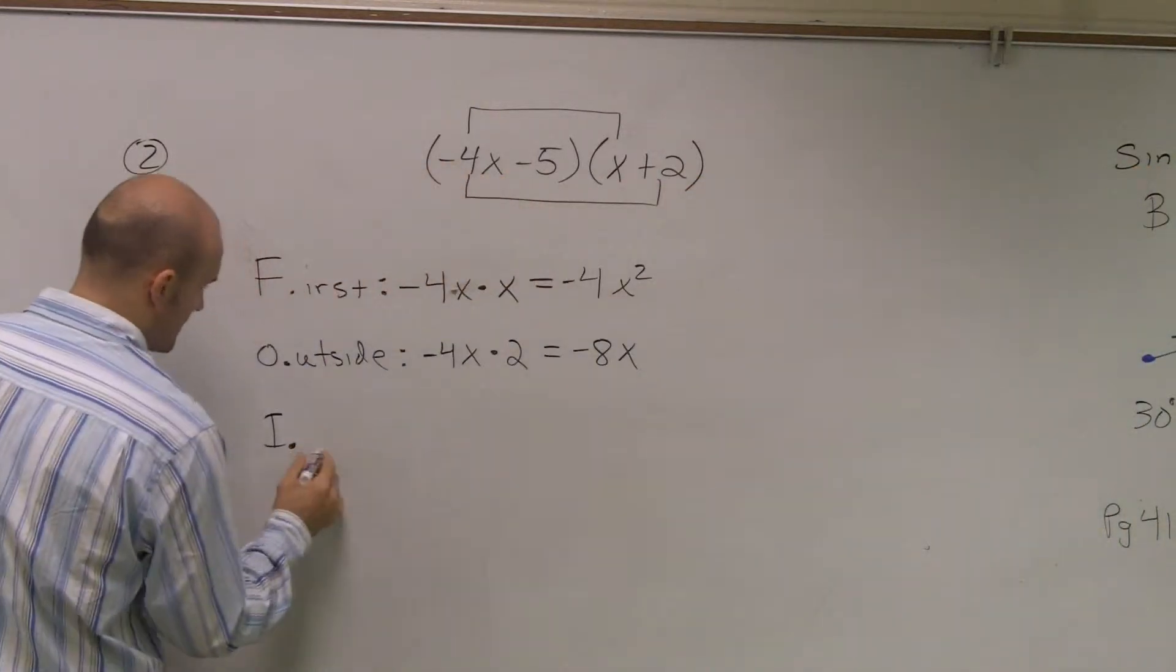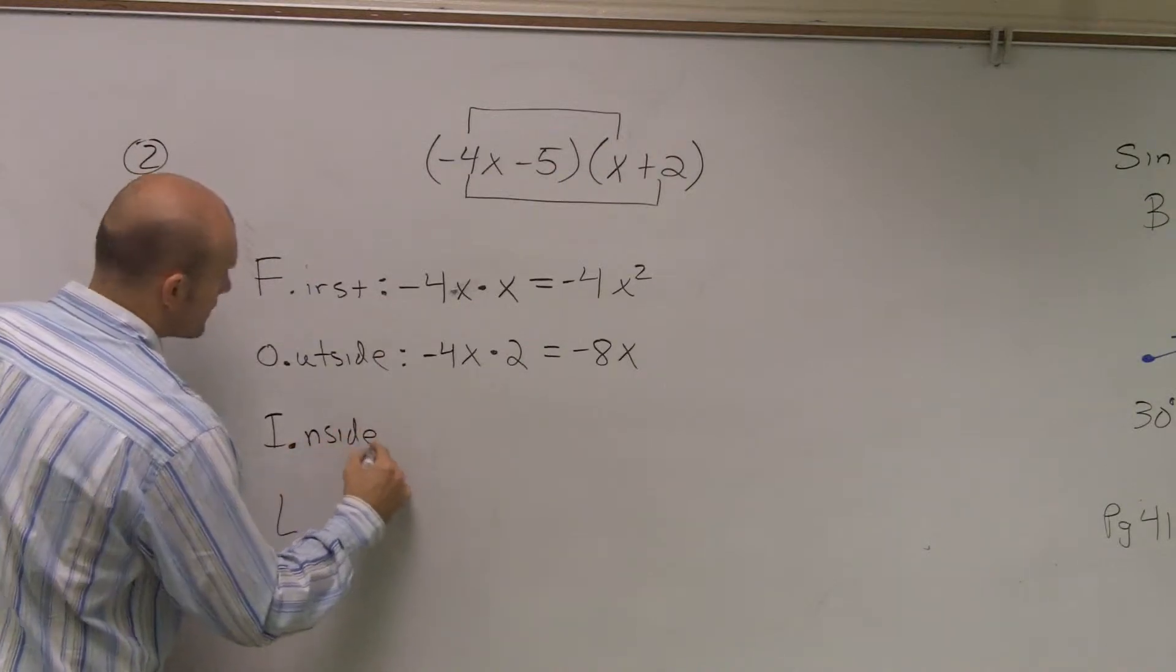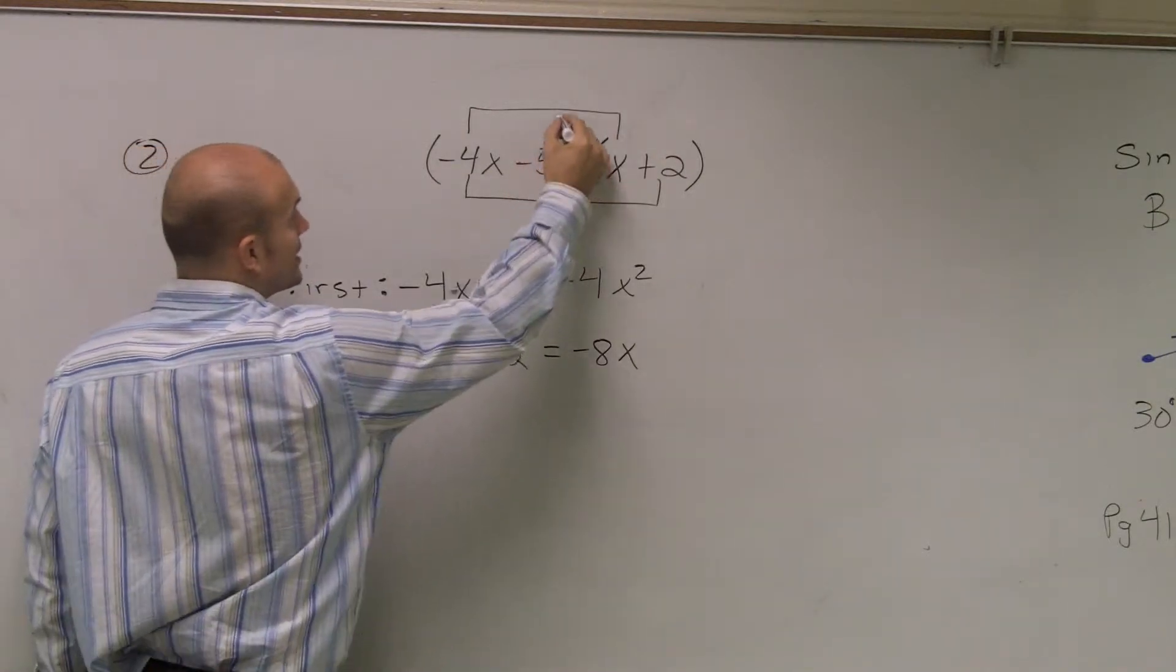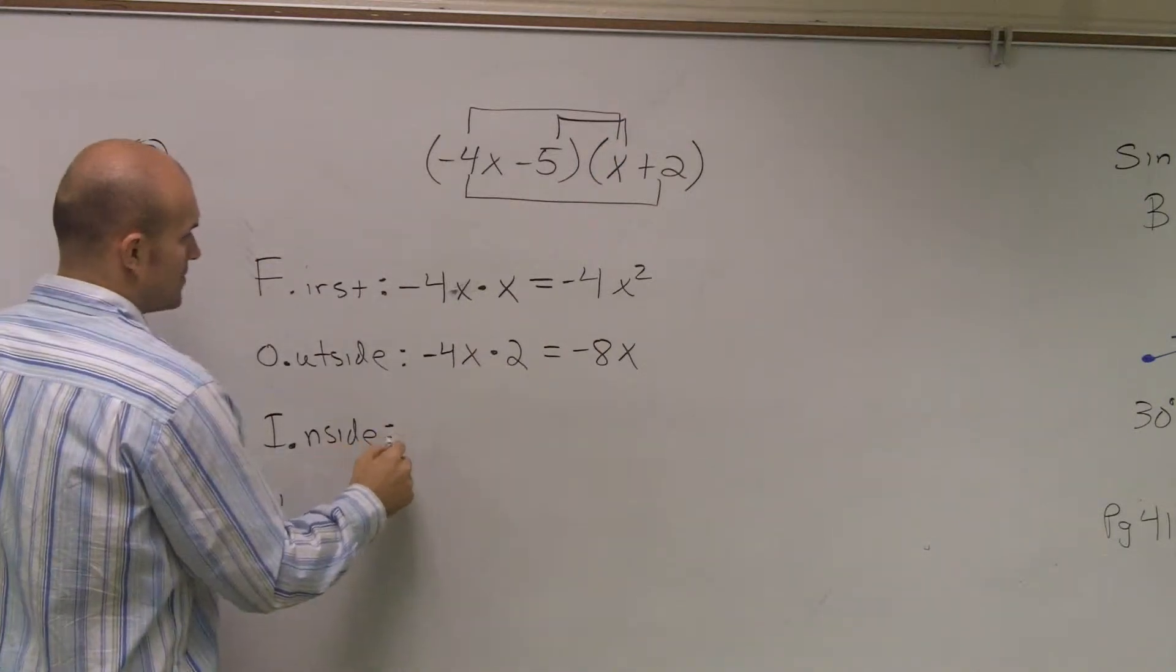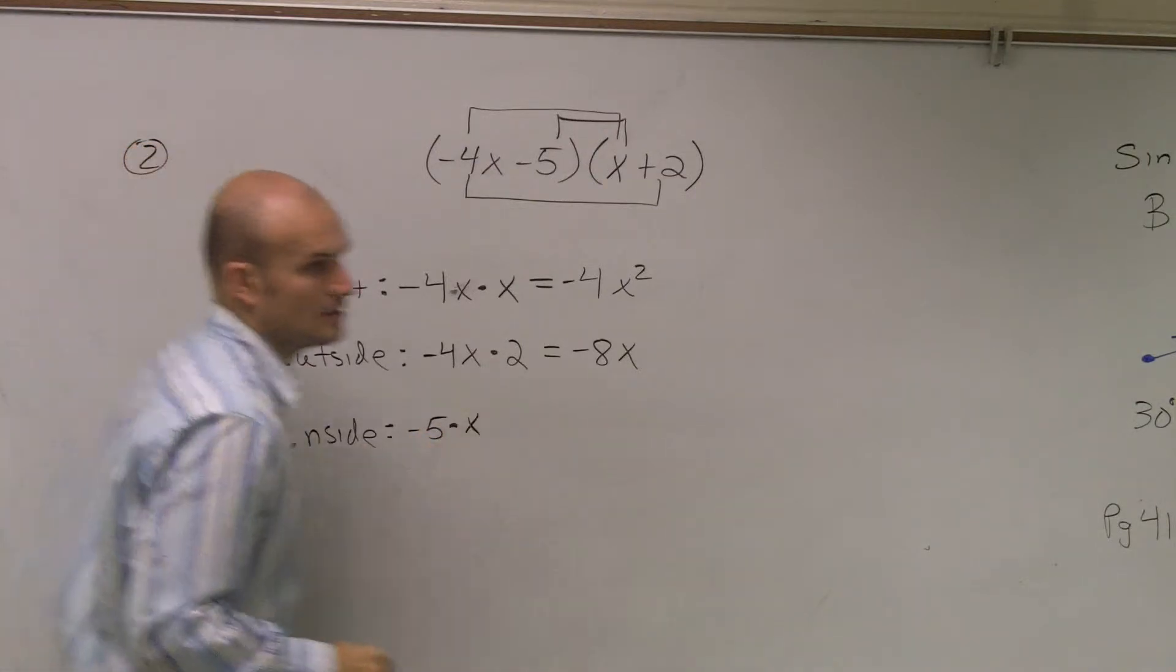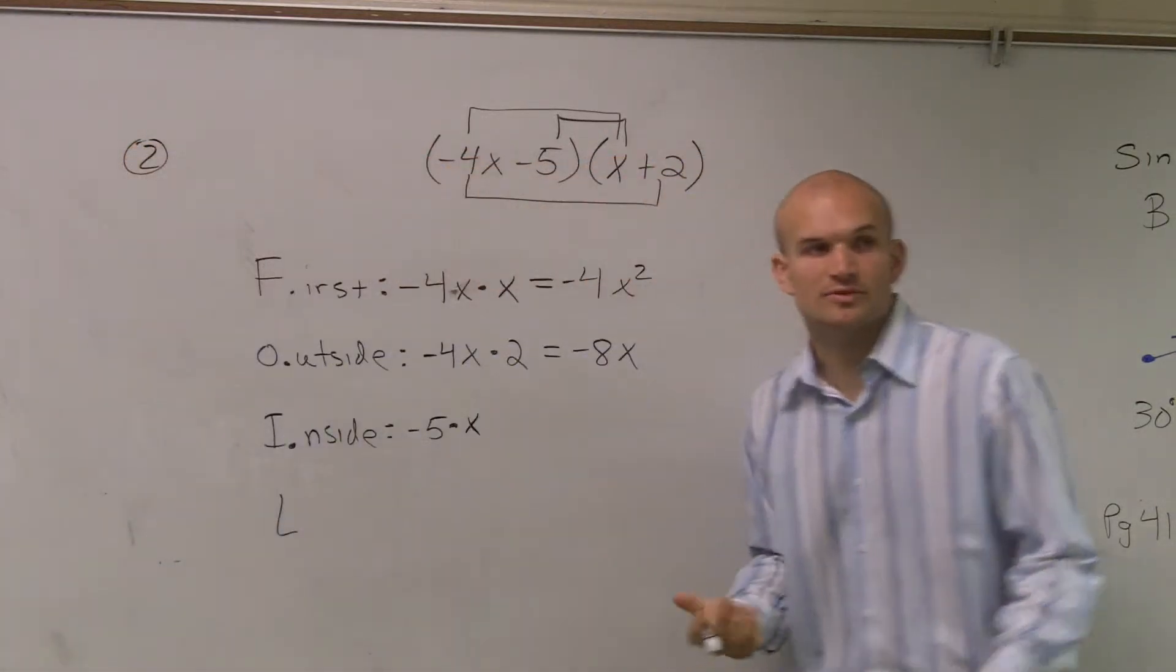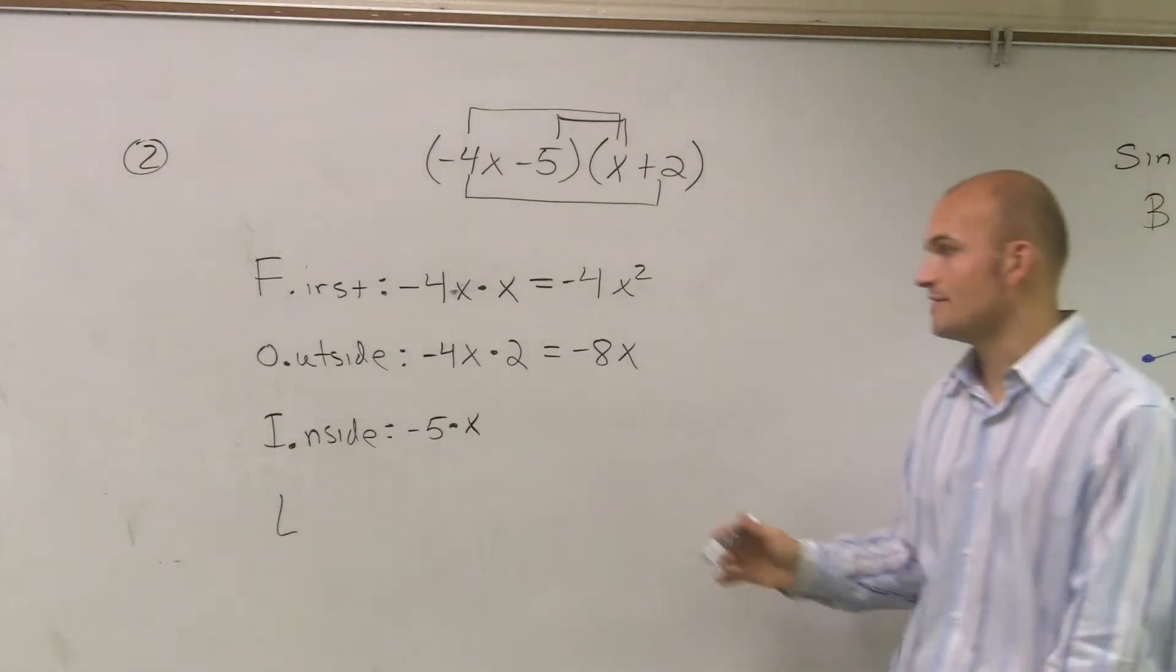I represents inside. So I take my two terms that are the inner two terms, which is negative 5 and x. So I just do negative 5 times x. Well, guys, a number times a variable, negative 5 times x is just going to be negative 5x.